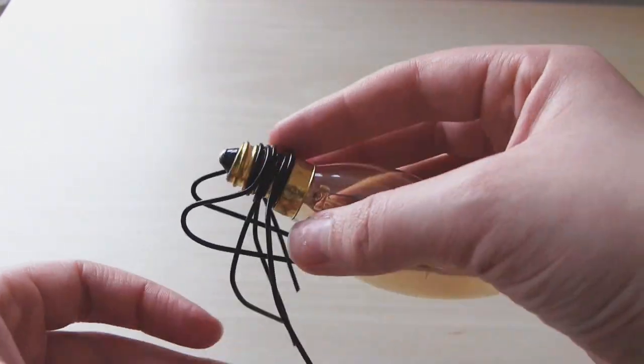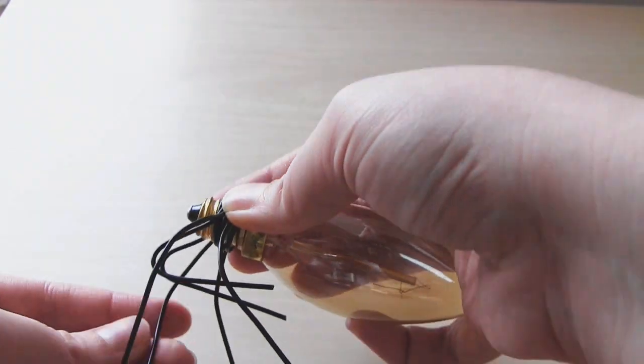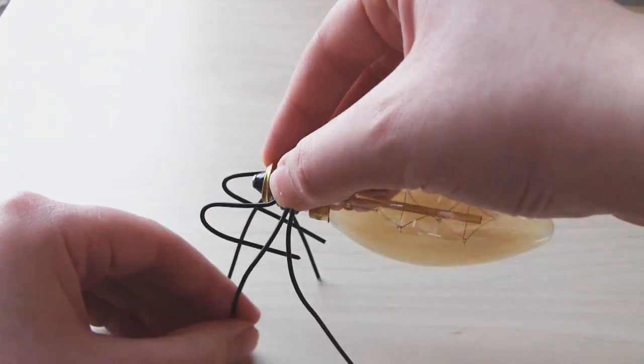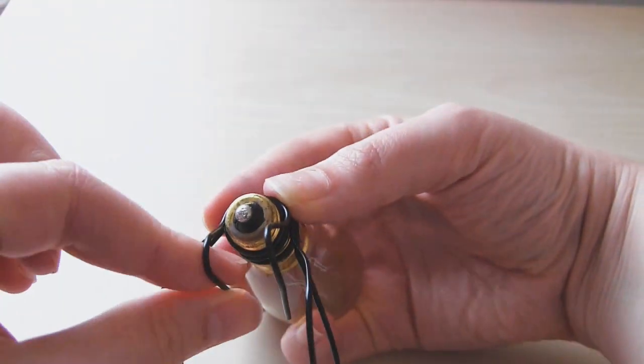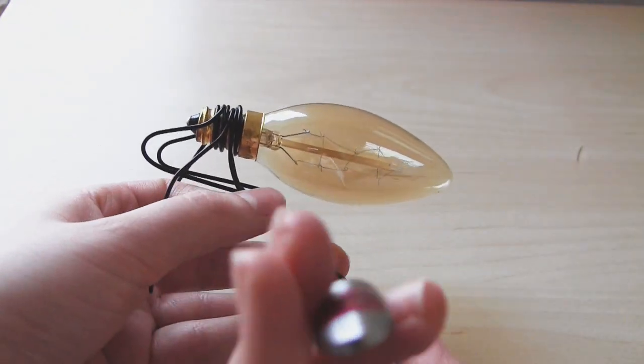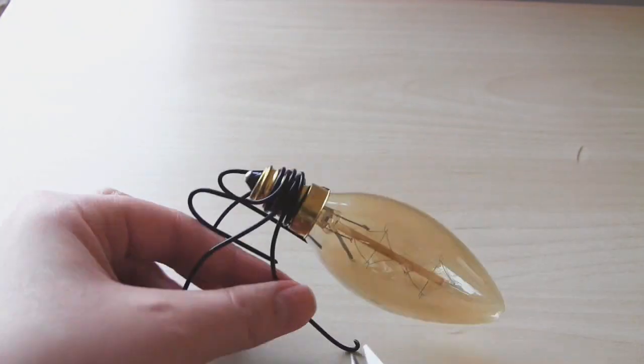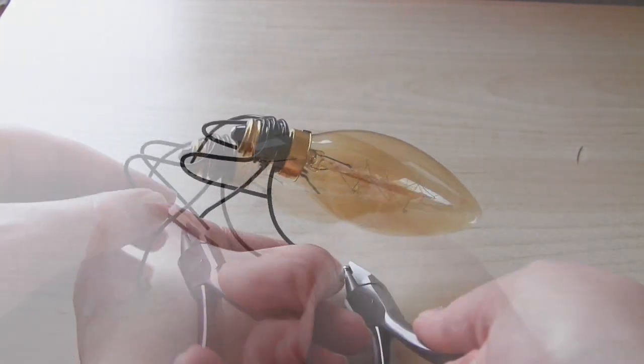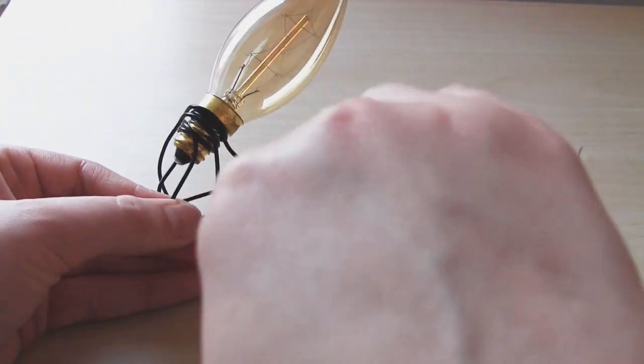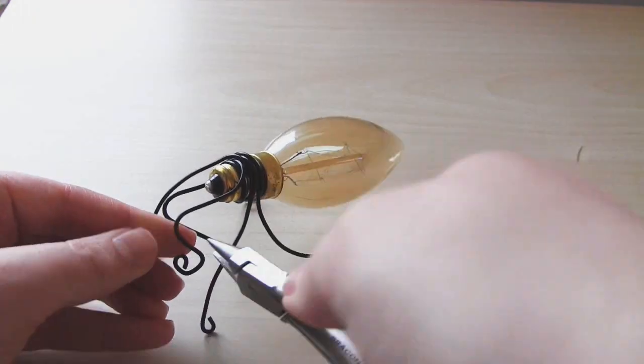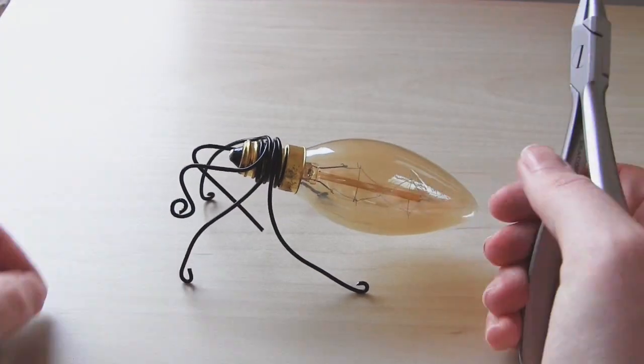Just make sure that you don't bend the same wire back and forth too many times because this does weaken it. I make loops on the ends of the legs using my pliers. And there you go, a very quick DIY insect made from a light bulb.